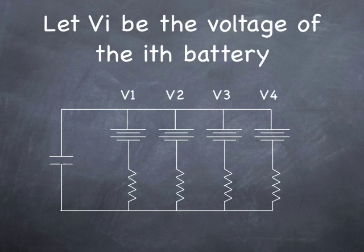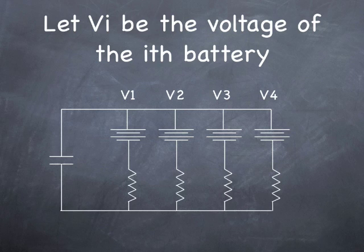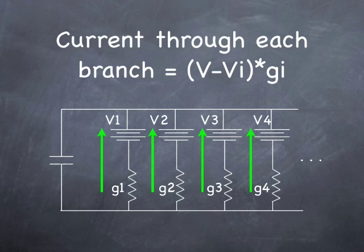Here's how it works, right? So let V sub i be the voltage of the ith battery, and let G sub i be the conductance of the ith resistor. So then the current through each of these branches is simply the voltage that's across them minus the voltage of the battery times the conductance that's there.